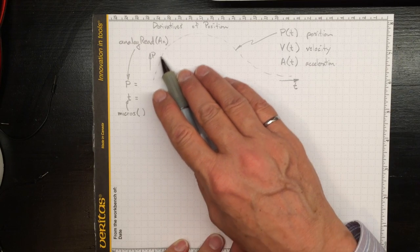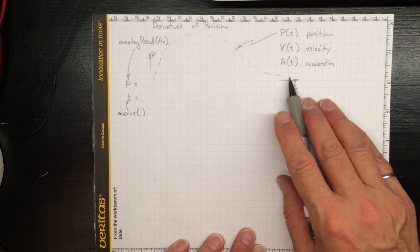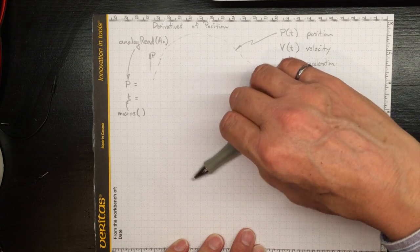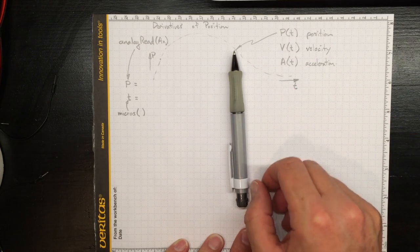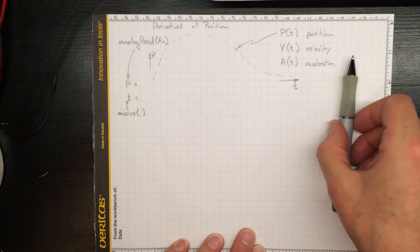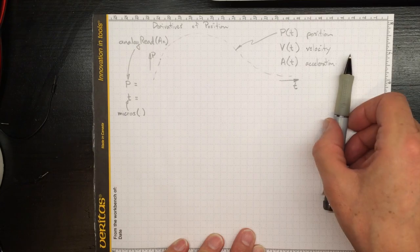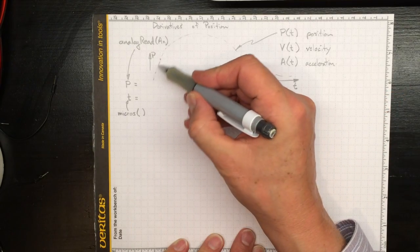Suppose we're tracking the position of something over time. It might be the rotational orientation of that pointer on the potentiometer, or it might be a linear motion back and forth in one axis. But it will change with time.